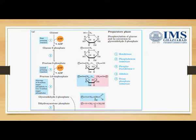Fructose-6-phosphate utilizes another ATP molecule and gets converted into fructose-1,6-bisphosphate with the help of enzyme phosphofructokinase-1. Next, aldolase enzyme cleaves this molecule into two three-carbon compounds: glyceraldehyde-3-phosphate and dihydroxyacetone phosphate. These are isomers and can be interconverted with the help of the enzyme triosephosphate isomerase.